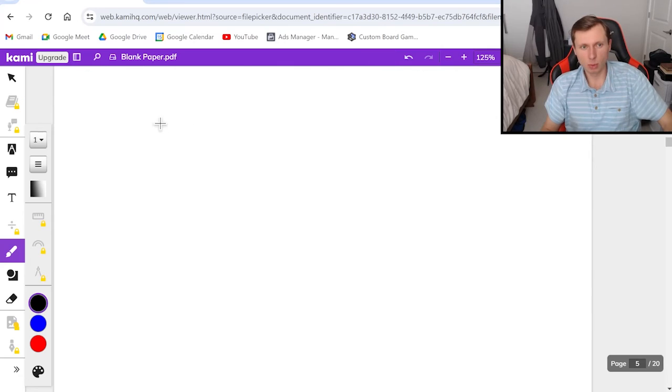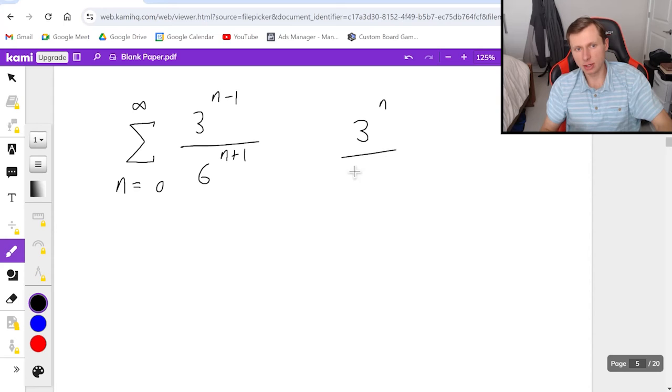And then one more example we'll look at today, it is the hardest one, the series from n equals zero to infinity of three to the n minus one over six to the n plus one. We know that we want the form three to the n over six to the n we need this. We don't have that though. So what am I going to do? I'm going to break it up so that I have it.